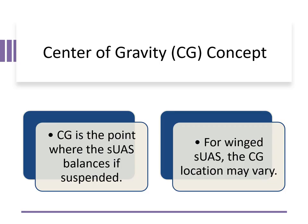The center of gravity, or CG, is the point where the drone would balance if suspended. This point shifts depending on how the drone is loaded. For a fixed-wing drone, for example, the center of gravity is critical and may vary depending on the specific design of the aircraft.